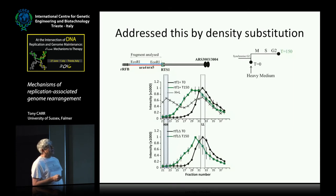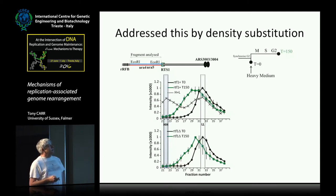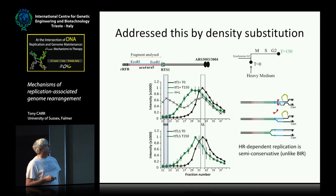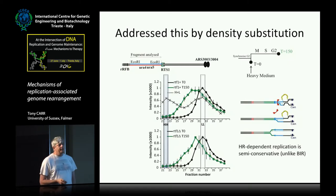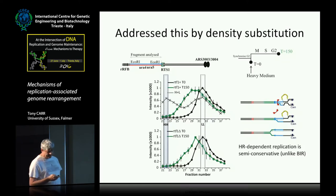We flipped the experiment — growing everything in heavy and switching to light — and got the same result. So the replication machine is replicating DNA in a canonical way in terms of semi-conservative replication. This is very unlike the situation in budding yeast where cells are arrested in G2, a double-strand break is made, and after failed homologous recombination for second-end capture you get a migrating D-loop — as shown by several groups a year or two ago.